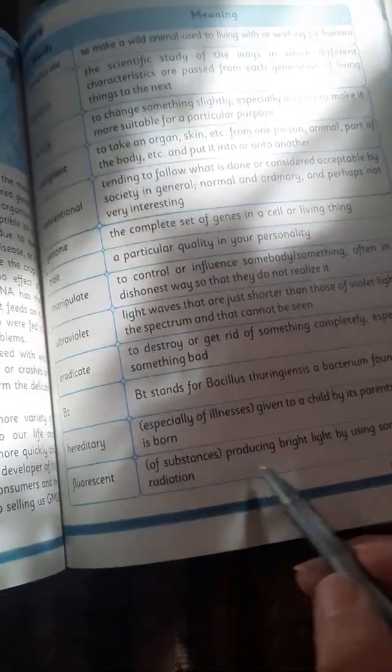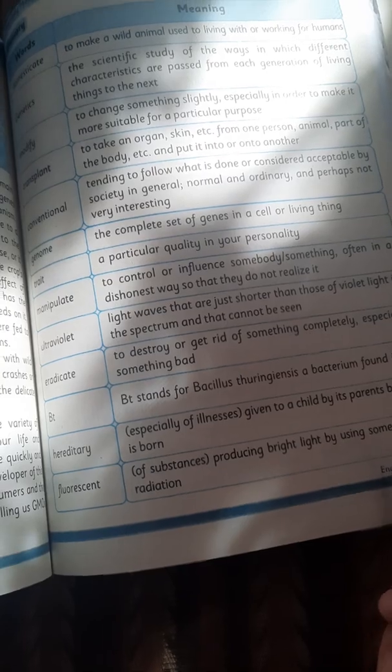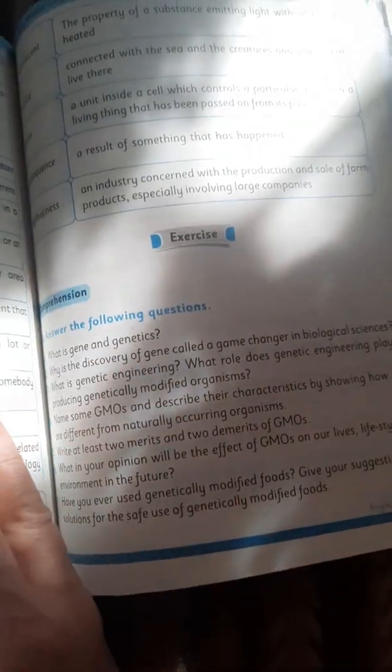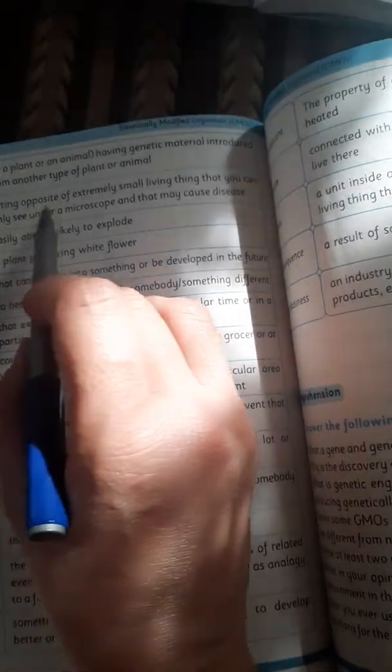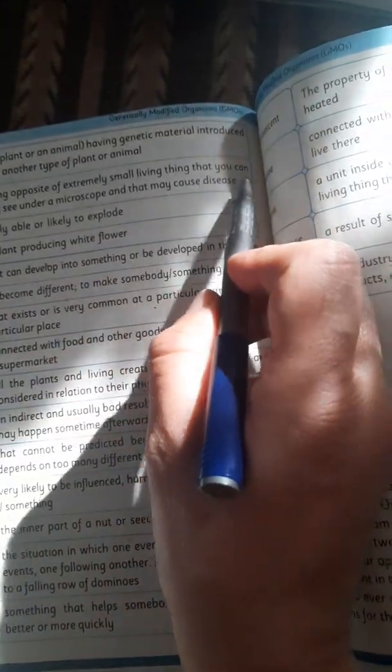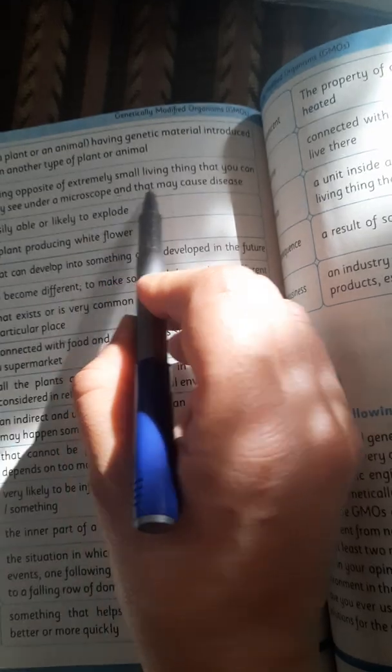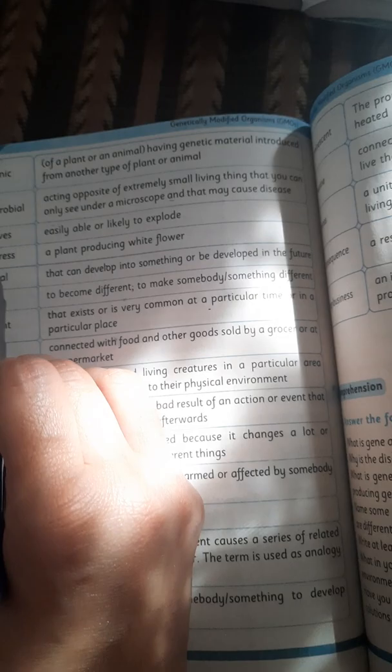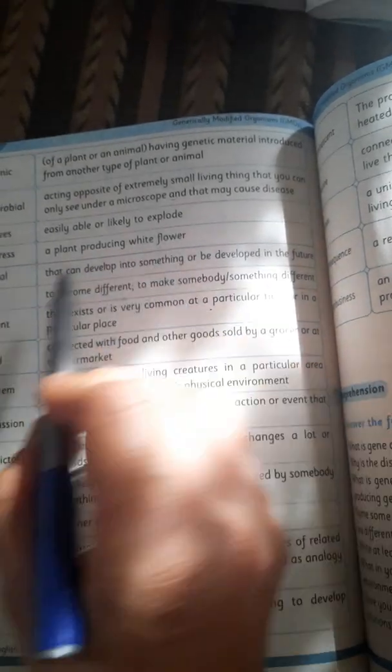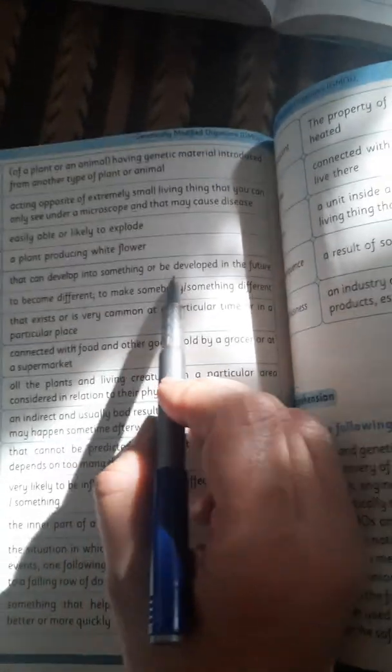Fluorescent: of substances producing bright light by using some forms of radiation. Transgenic: of a plant or an animal having genetic material introduced from another type of plant or animal. Antimicrobial: acting opposite of extremely small living things that can only be seen under a microscope and that may cause disease. Explosive: easily able or likely to explode. Thale cress: a plant producing white flowers. Potential: that can develop into something or be developed in the future.